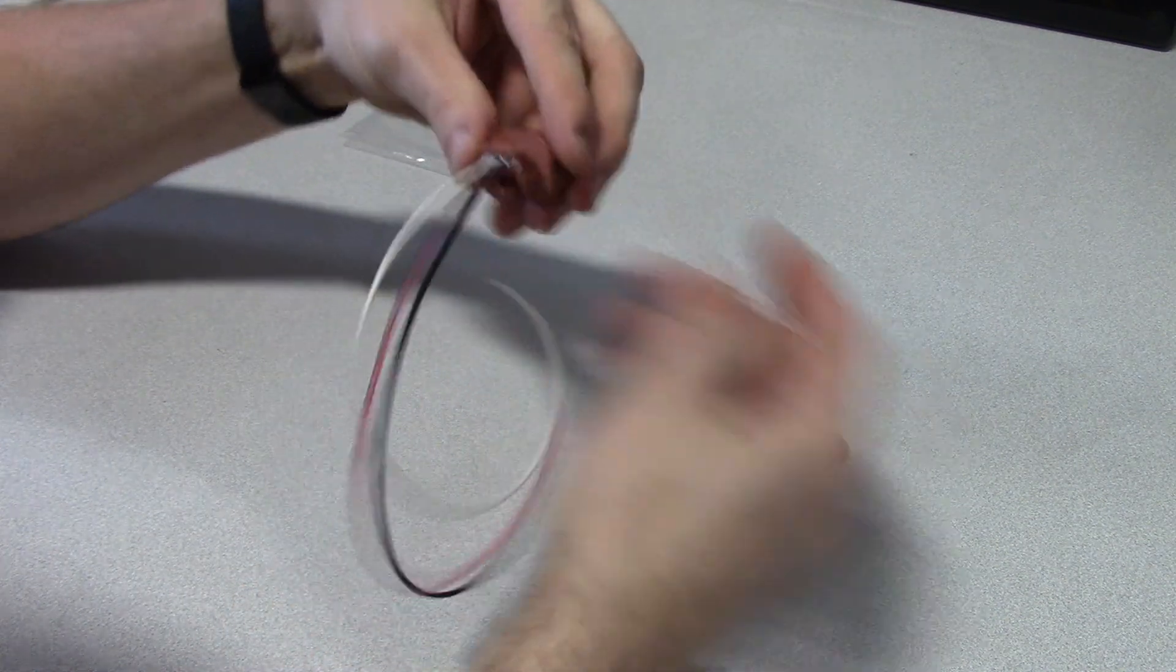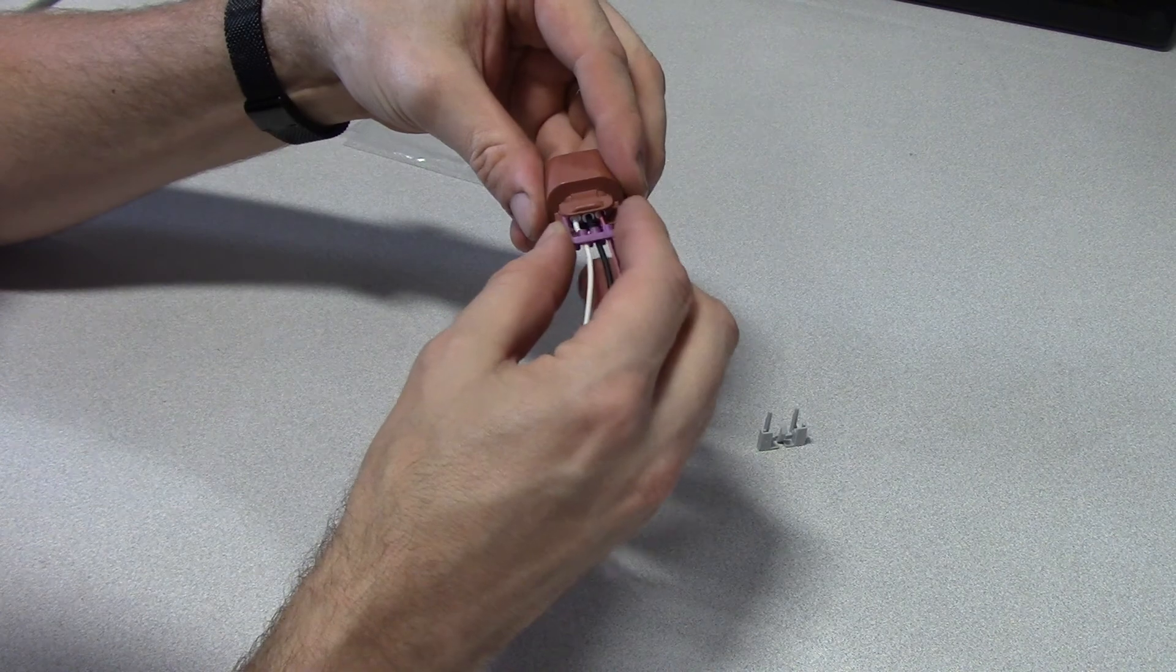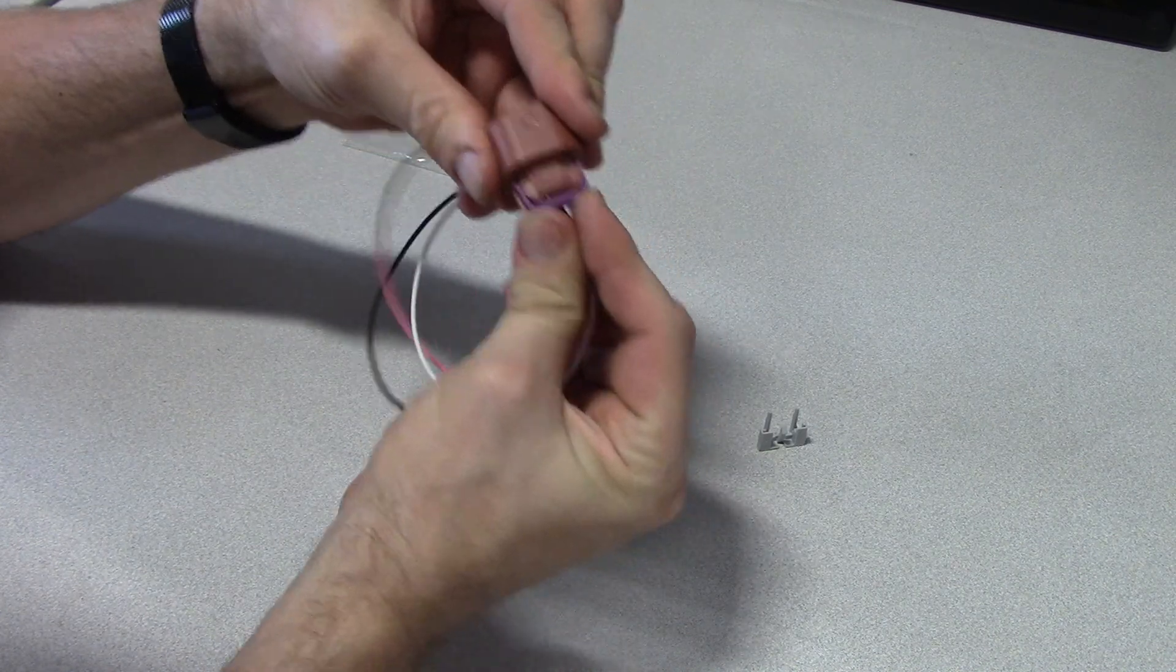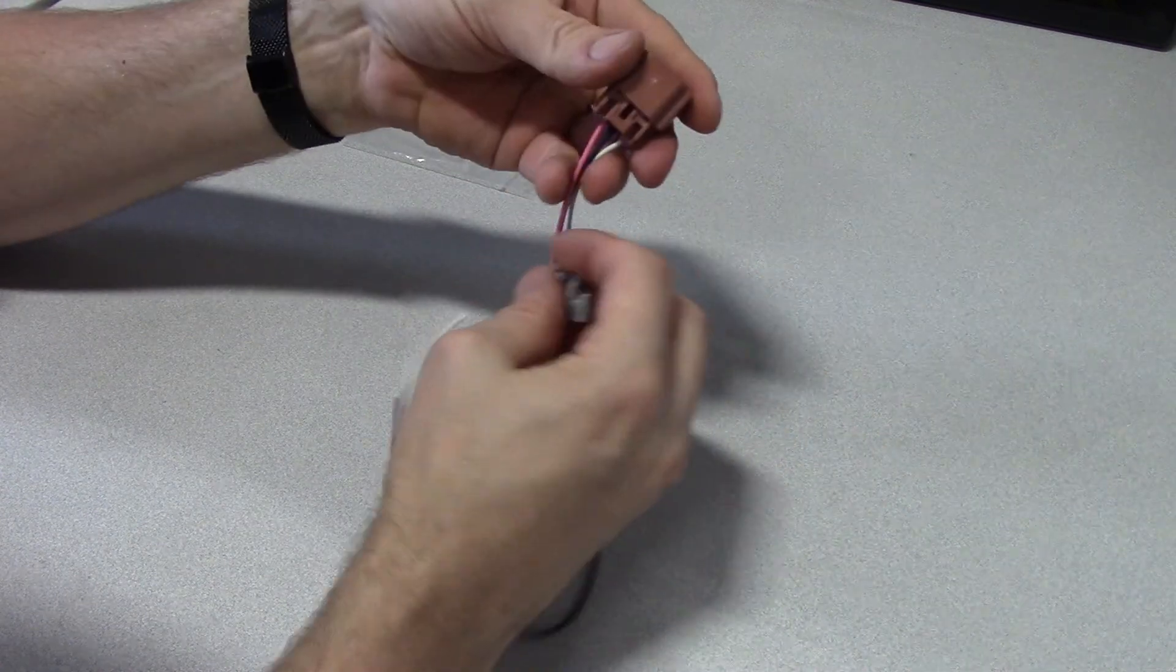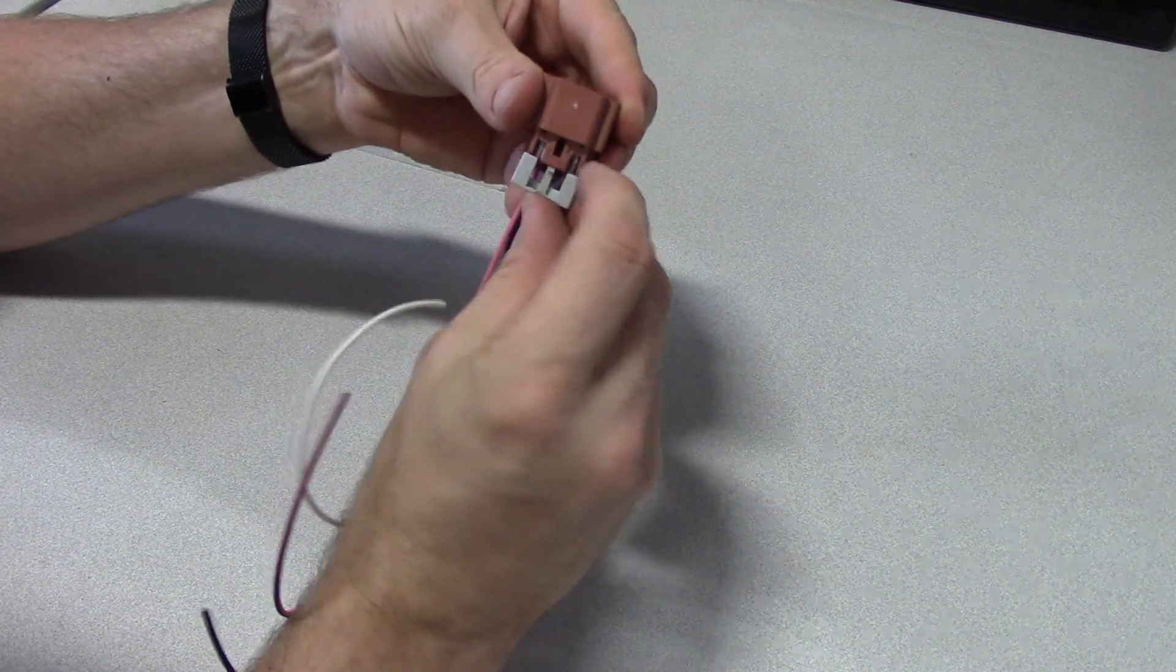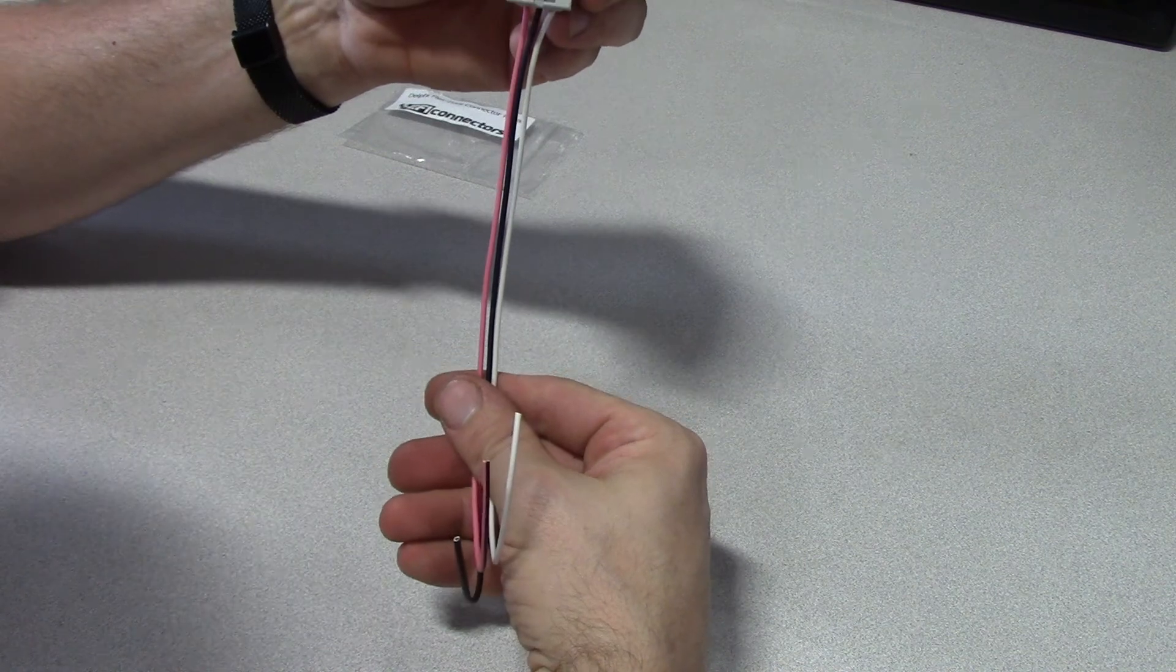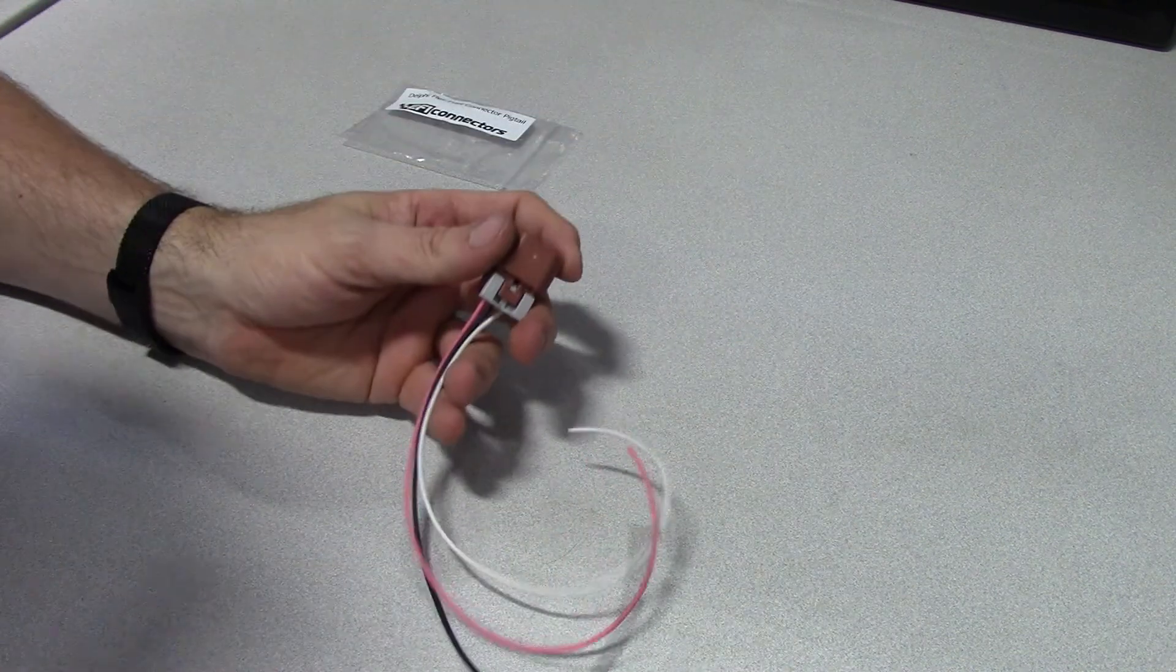Put the seal retainer in, push that till it clicks, and you can put it on the sensor. And then put the lock in and you're all done. Hopefully this is helpful. Thanks.